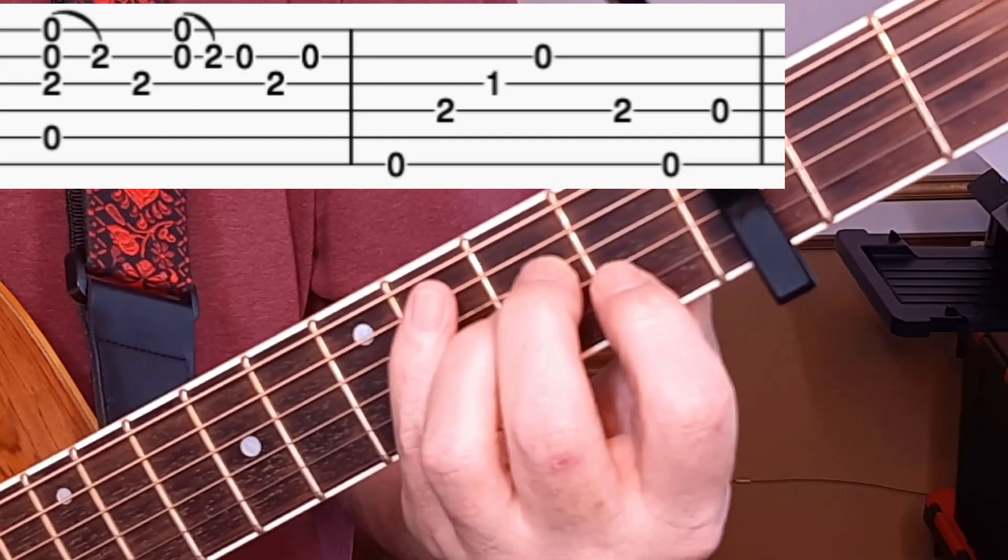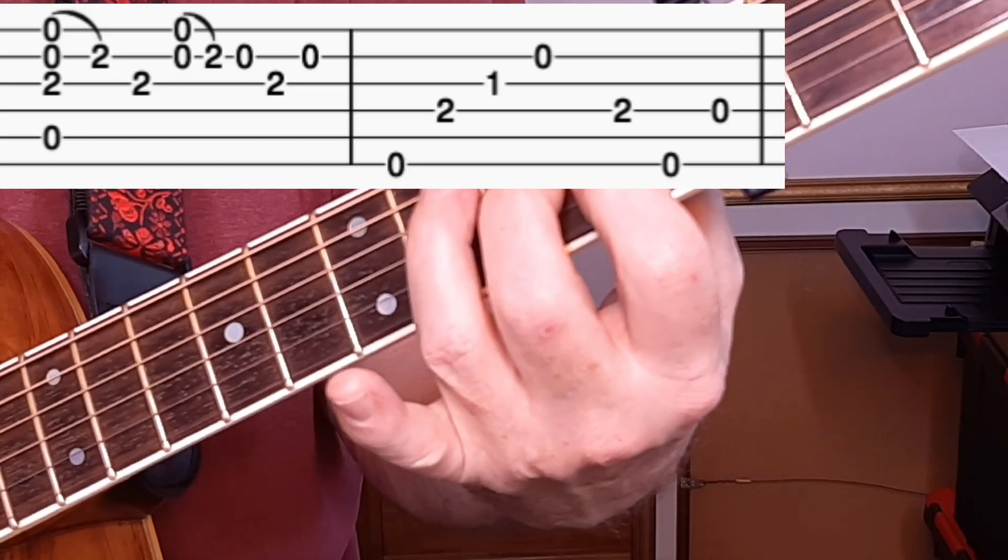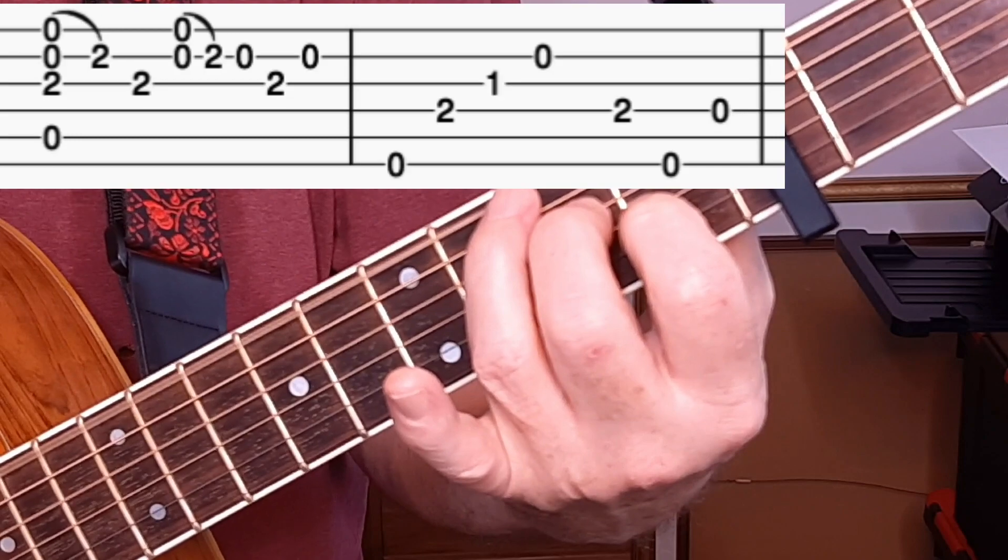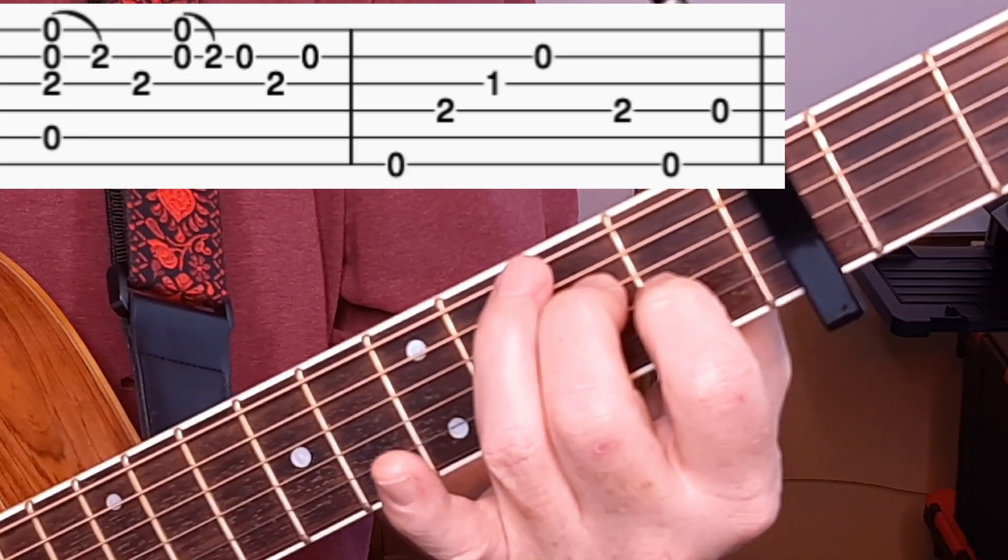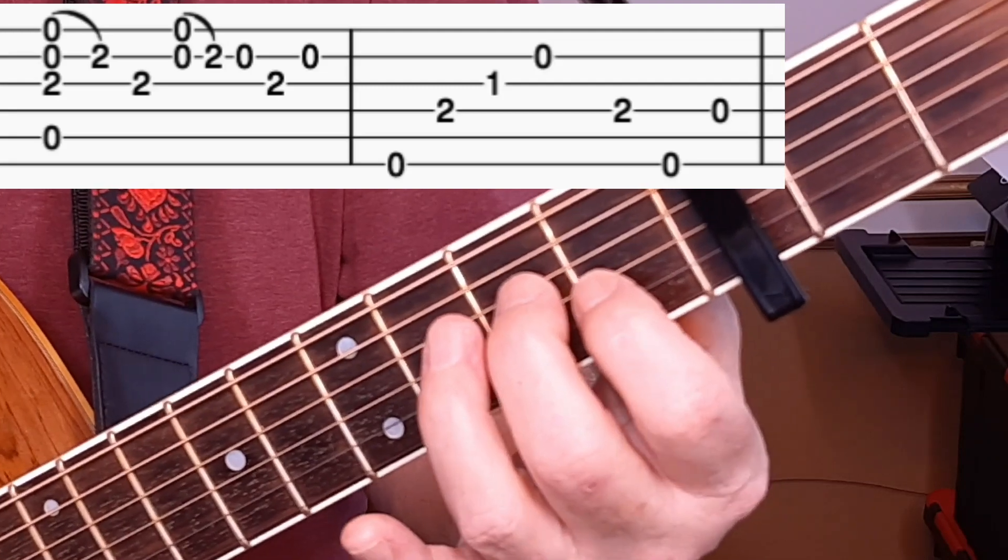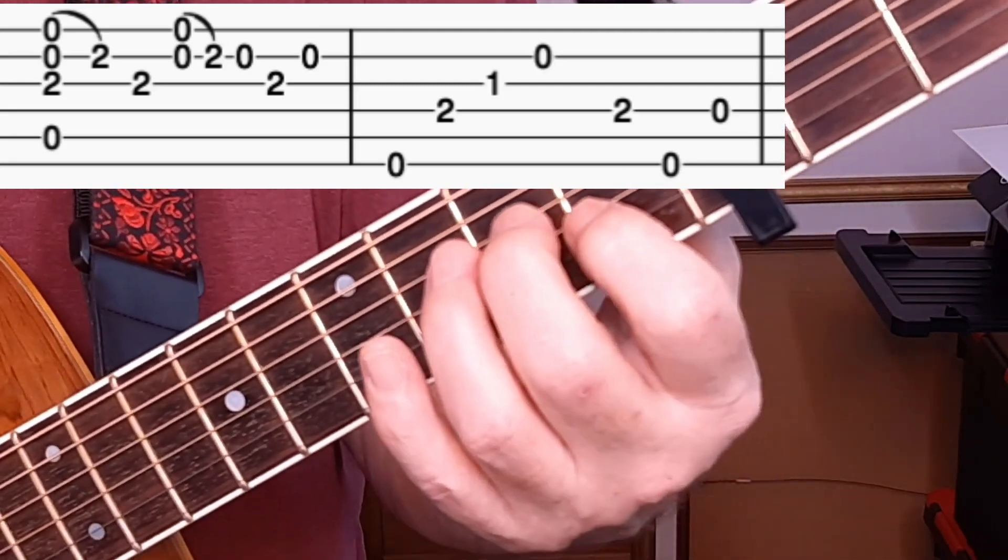And then we're going to an E, and this E is a Lightning Hopkins E. That's just playing these two notes here. And at the end, we take our fingers off to get the open B at the end of measure six.